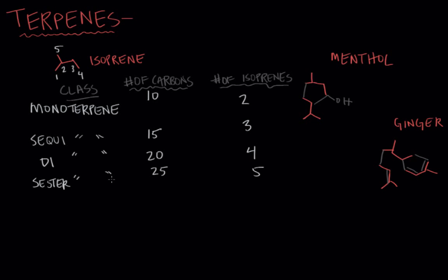You could just keep going—six isoprene units for 30 total carbons would be a triterpene because essentially now we've got three monoterpenes. If you added another monoterpene to that, you'd have a tetraterpene with 40 carbons and eight isoprene units.